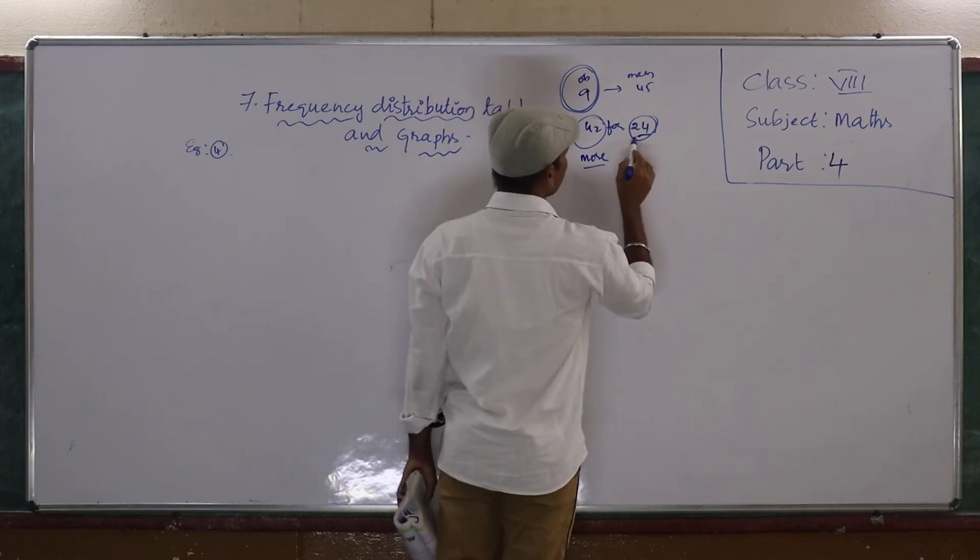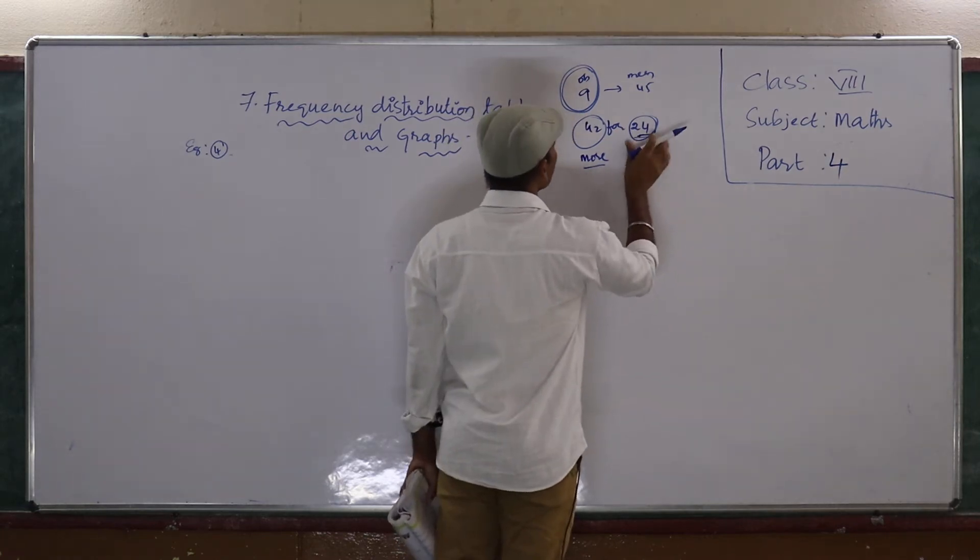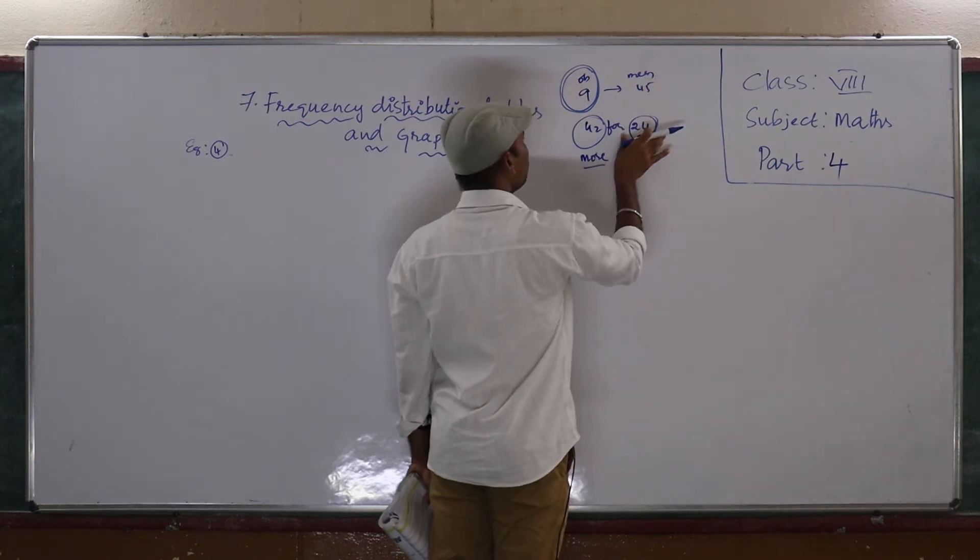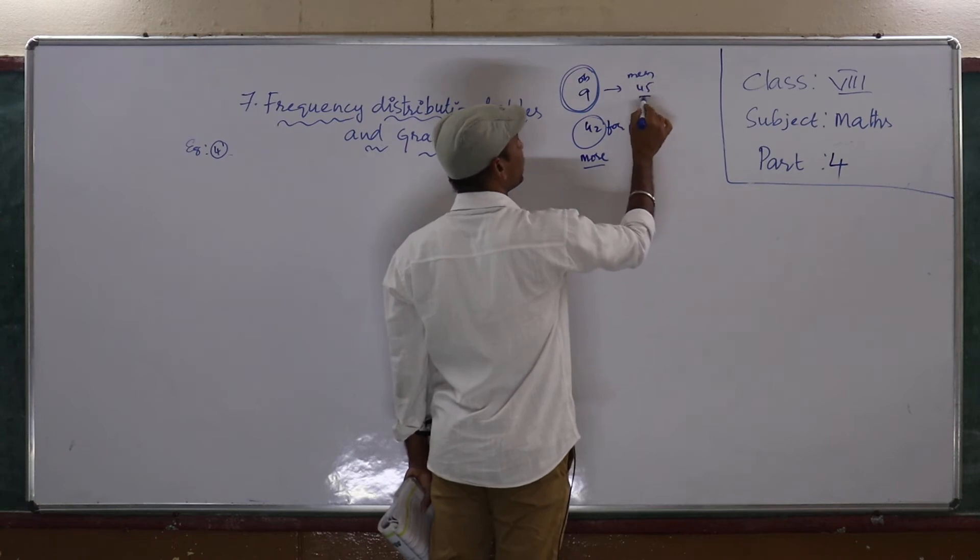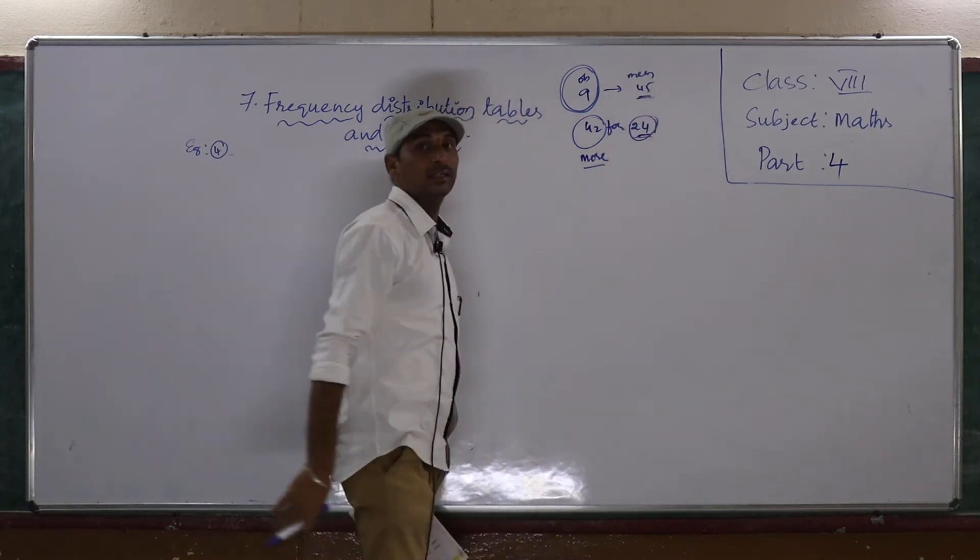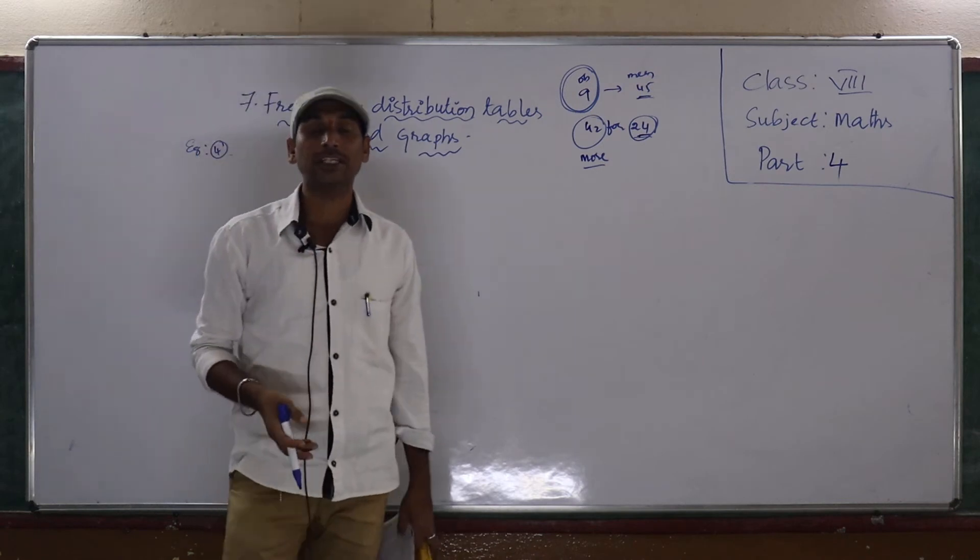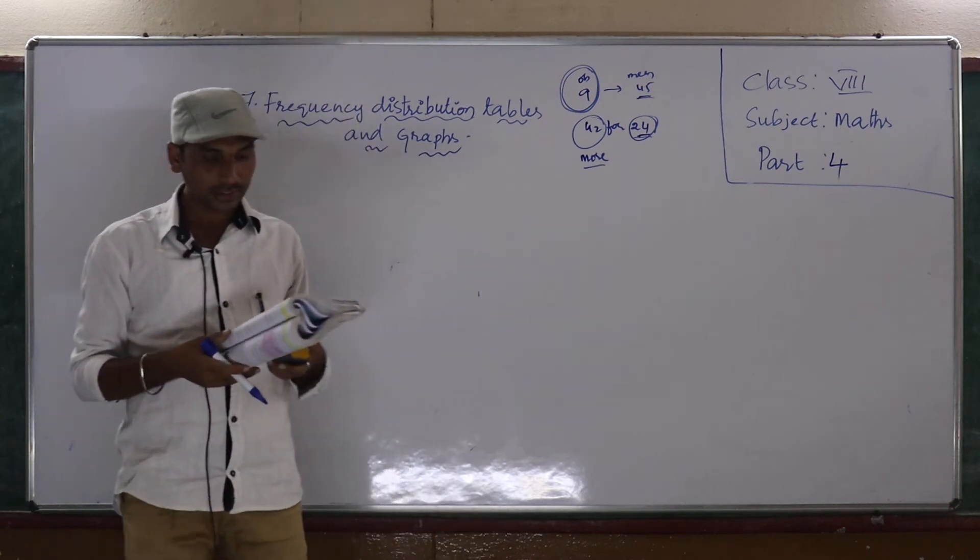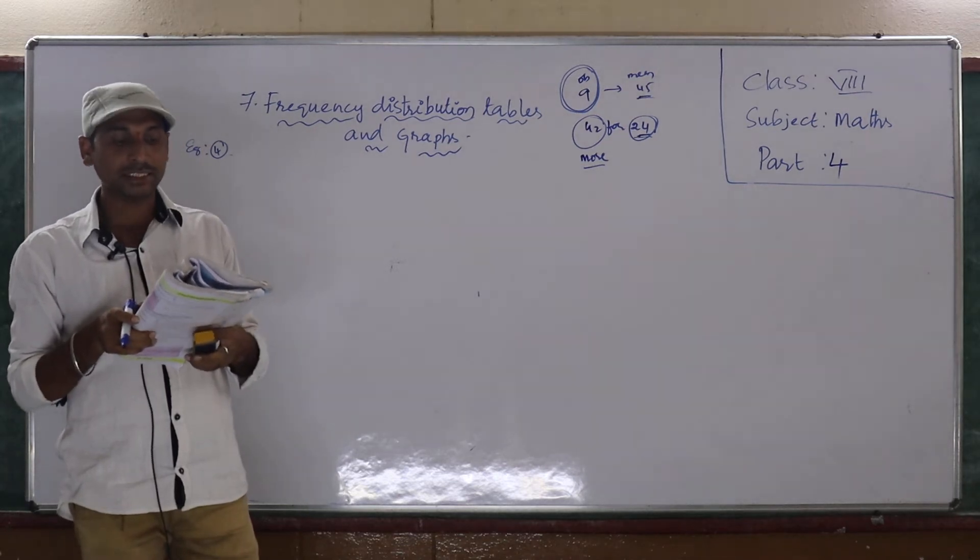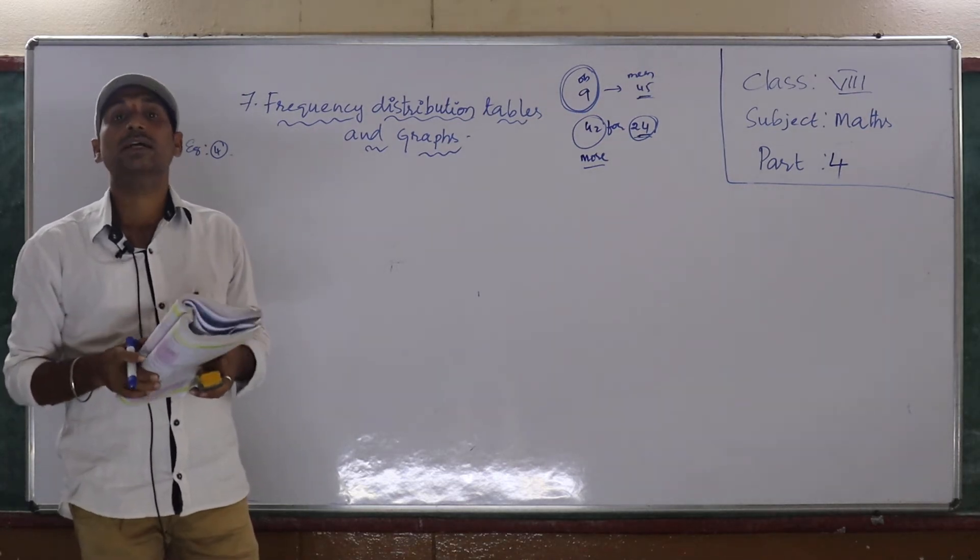If you will take 24, you won't get 45. Because 42 is more than 24, that's why we are getting 45. Actually, 24 is there. By mistake they written 42. Then what would be the correct mean? What is the correct mean?